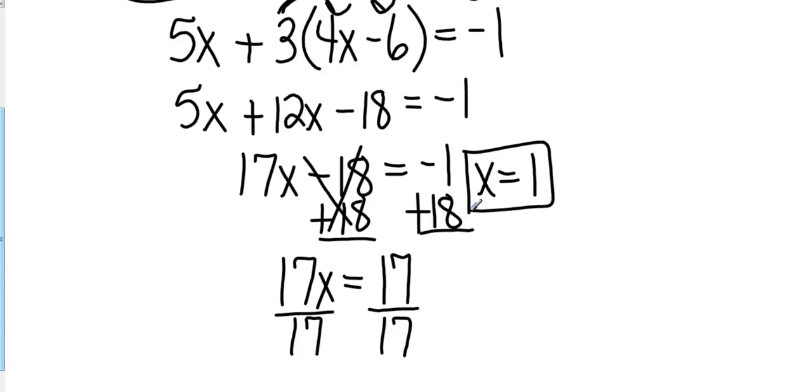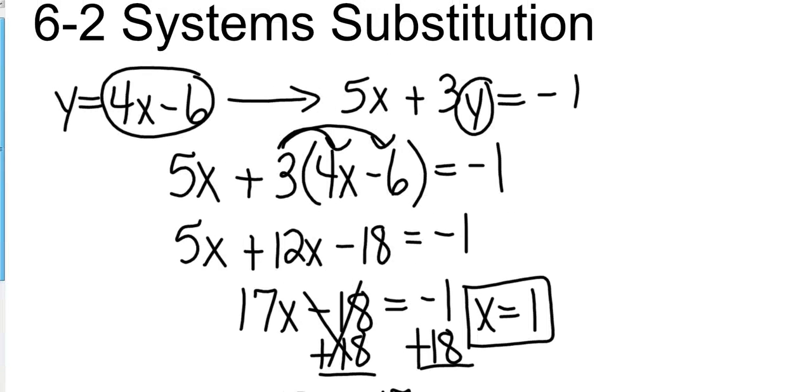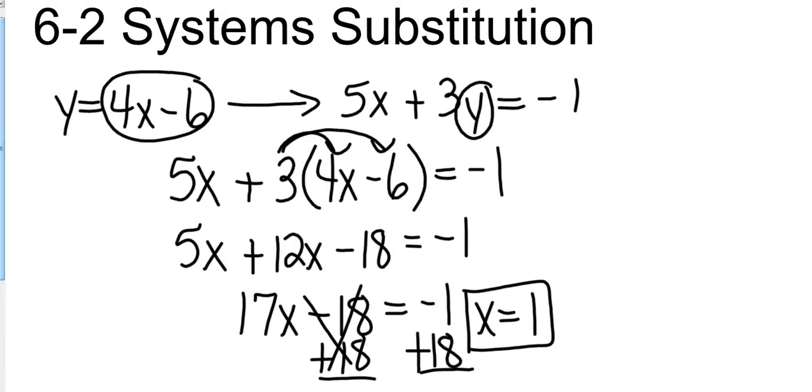Okay, so now we're halfway there. We know what x is. So I'm going to go back to one of my original equations, and I'm going to take the y equals 4x minus 6.